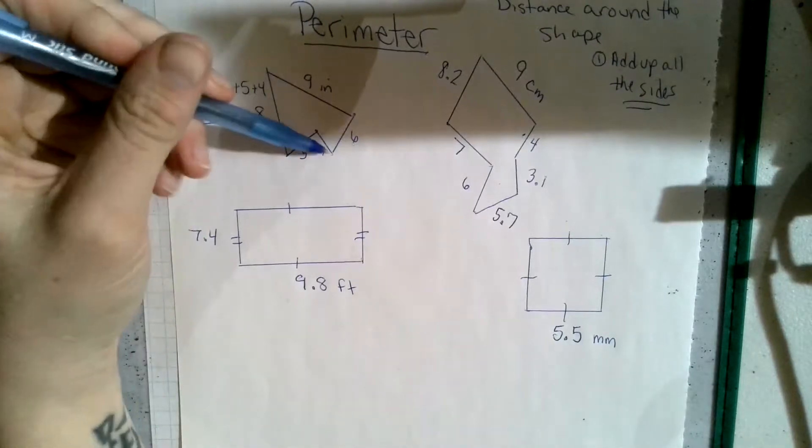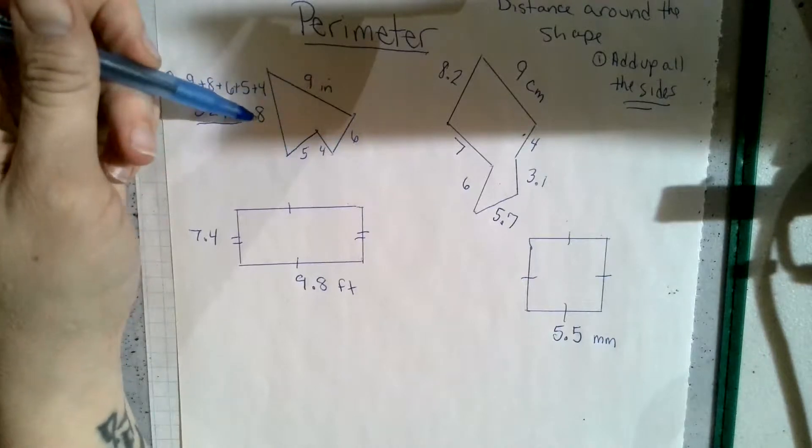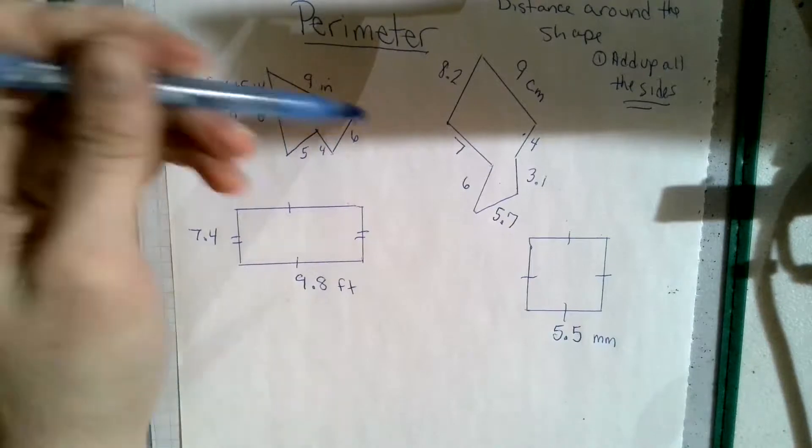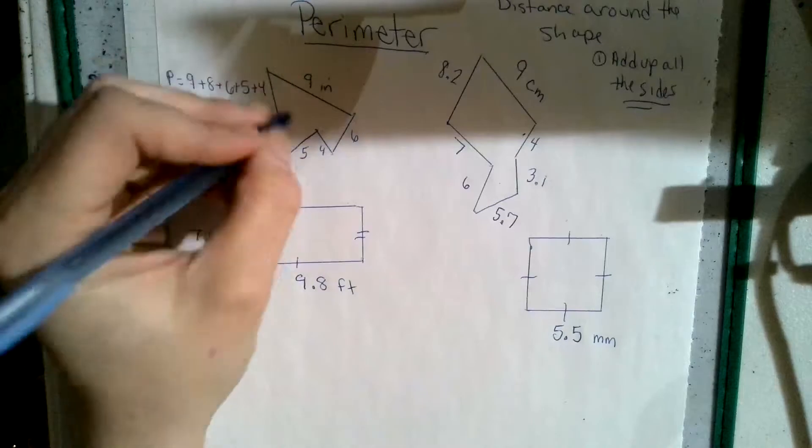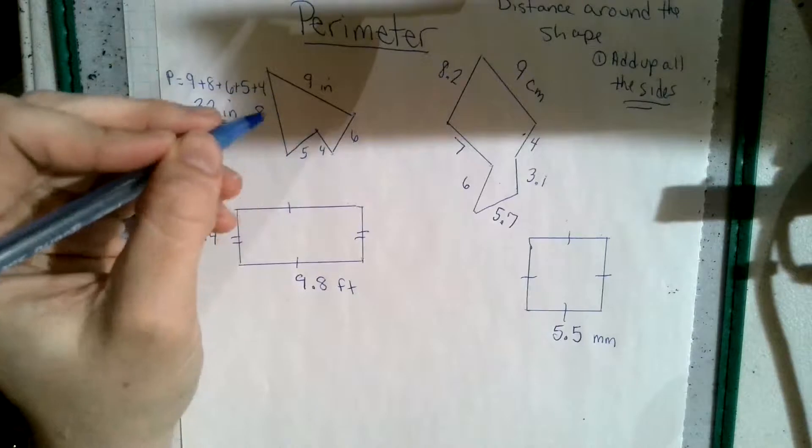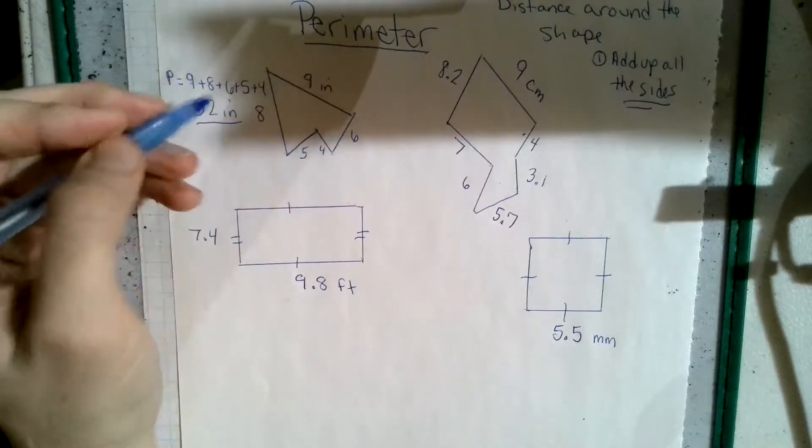So we check it again. We have 10, 19, 24, 28, 29, 30, 31, 32. So we are correct with 32 inches on this shape. Now this is a 1, 2, 3, 4, 5. So this shape right here is a pentagon. Even though it doesn't look like the regular pentagon from the other day, it still is a five-sided shape.